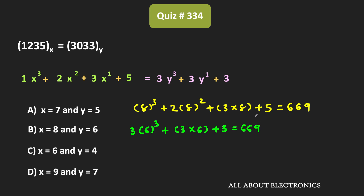If we try option C with x equal to 6, the two expressions are not equal, so C is not the answer. Similarly, trying option D with x equal to 9, we get 923, and for y equal to 7, we get 1053. Since these two numbers are not equal, option D is also not correct.